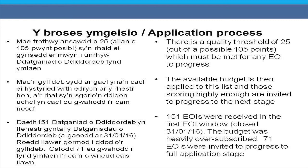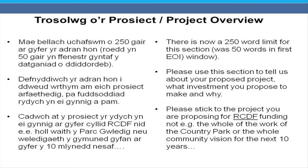Now let's look at the expression of interest form itself. A few amendments have been made, so if you applied in the first window you will notice some changes. For the project description section, there is now a 250 word limit — it was 50 words previously. Please use this section to tell us about your proposed project, what investment you propose to make with the funding, and why.